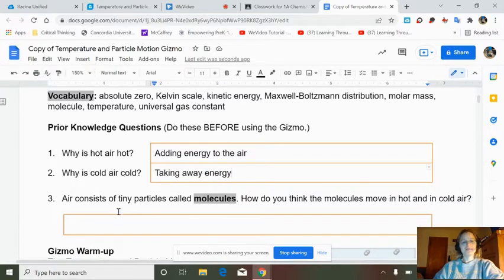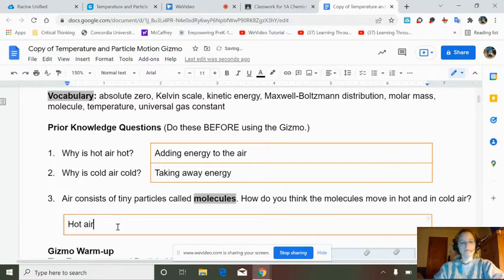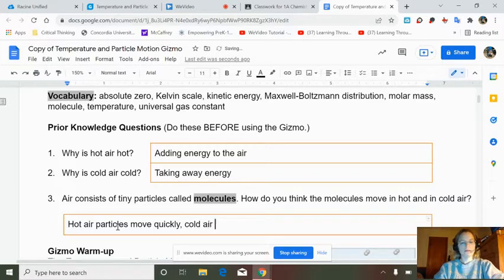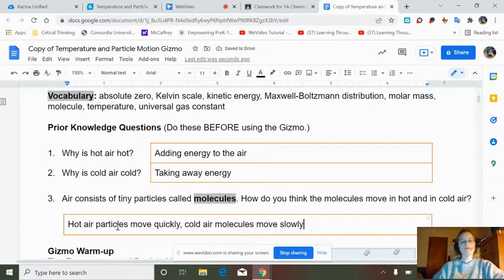So the next one. Air consists of molecules. How do they move in hot air and cold air? If you have a, let's picture you with a lot of energy. What are your movements like? Pretty fast. So hot air particles move quickly. And then reverse that for cold air. If you're going two days without sleep and you haven't eaten much, you're probably pretty slow. So cold air molecules move slowly.